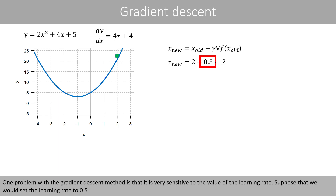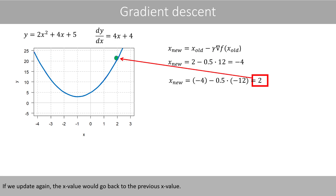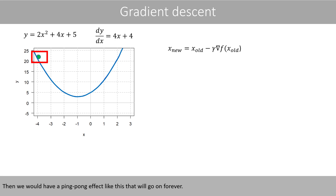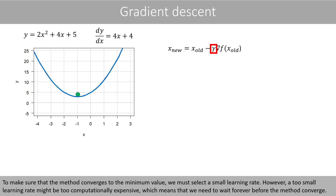One problem with the gradient descent method is that it is very sensitive to the value of the learning rate. Suppose that we would set the learning rate to 0.5. That would result in that the new x value is equal to negative 4. If we update again, the x value will go back to the previous x value. Then we would have a ping-pong effect that will go on forever. A larger learning rate would even result in that the x value would move away from the minimum value. To make sure that the method converges to the minimum value, we must select a small learning rate. However, a too small learning rate might be too computationally expensive, meaning we need to wait forever before the method converges.